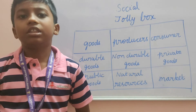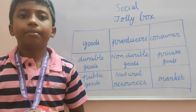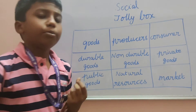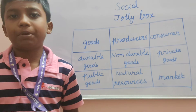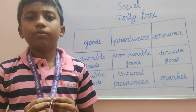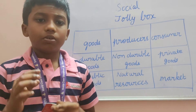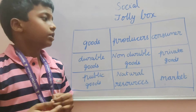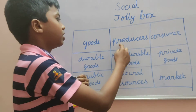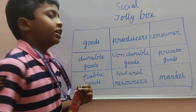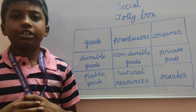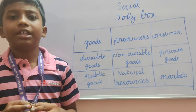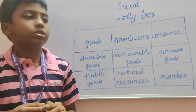The things that we make for sales is called goods. Producer is a person who produced the things for sales. Consumer is a person who buys the goods and uses goods.